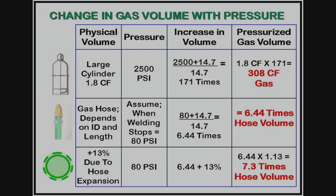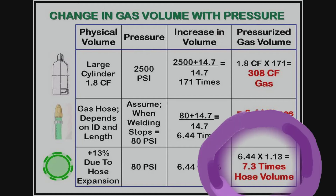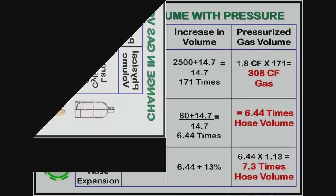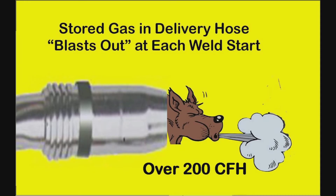However, requiring over 25 psi to maintain preset flow causes a problem. Every time welding stops, gas continues to flow through the needle valve or orifice and quickly fills the gas delivery hose with excess gas — up to seven times its physical volume. That stored gas then blasts out of the gun nozzle at each weld start.